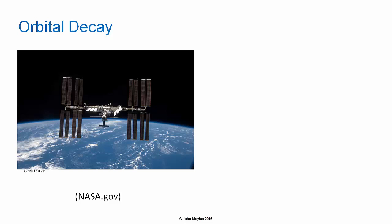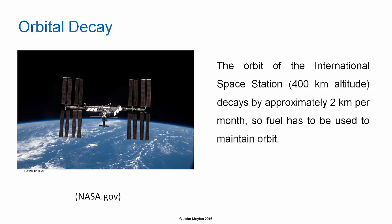The orbit of the International Space Station, at approximately 400 kilometers altitude, decays by around two kilometers per month. To compensate for this orbital decay, fuel must be burnt to maintain orbit.